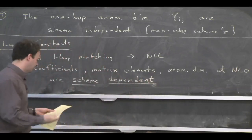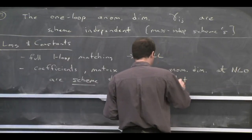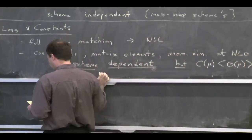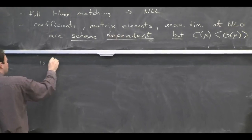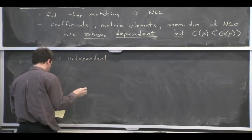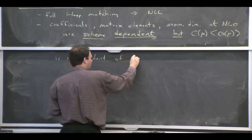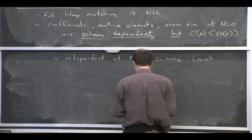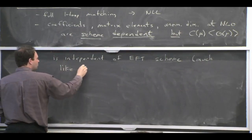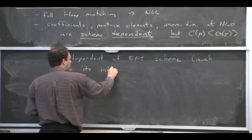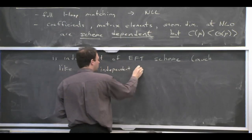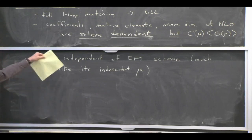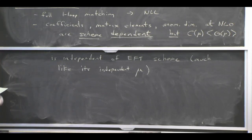You might think that if we get scheme-dependent results we should just stop, because maybe we can't understand what's going on. But C(μ) times O(μ) is independent of the scheme. It's a physical observable, and physical observables don't depend on our definitions of things — nature gets to decide, not us. We already saw scheme independence in the statement that C(μ)×O(μ) is independent of μ, but there's an even deeper scheme independence: it's independent of whether we chose MS-bar or some other scheme.